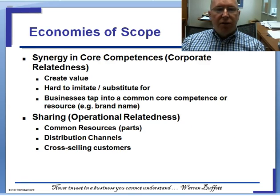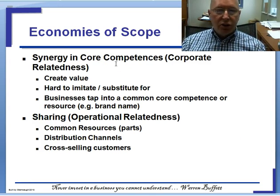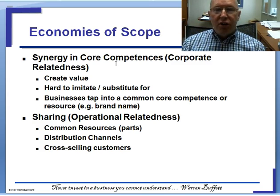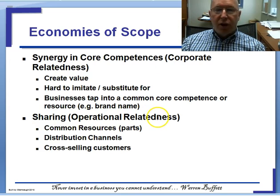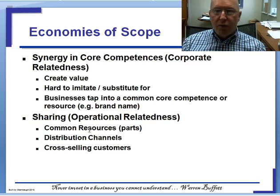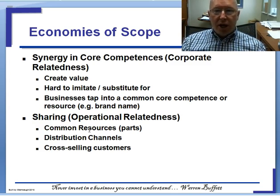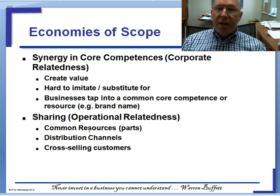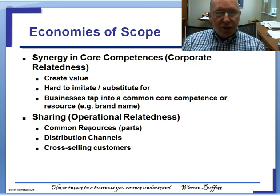Economies of scope — the magic word is sharing. You'll have several questions on the exam that challenge you to identify whether sharing is taking place: whether that sharing is corporate relatedness, meaning they're sharing their know-how, or operational relatedness, meaning they have some operations or physical components in common used across both businesses. A good part of the exam is: can you identify sharing, and can you attribute that to a related diversification strategy?